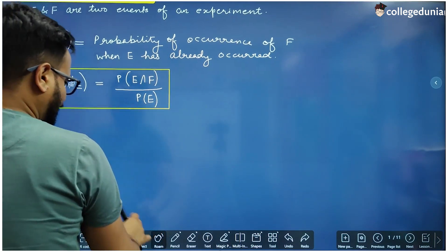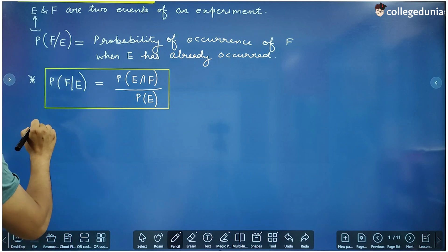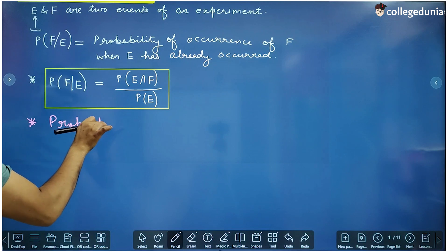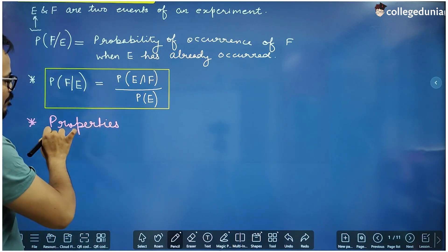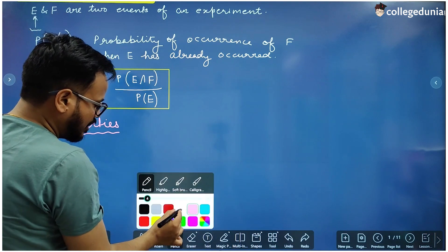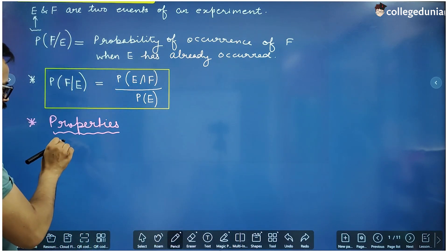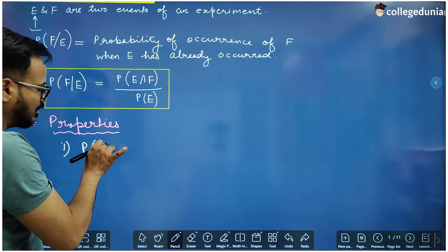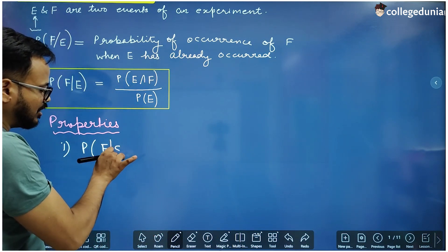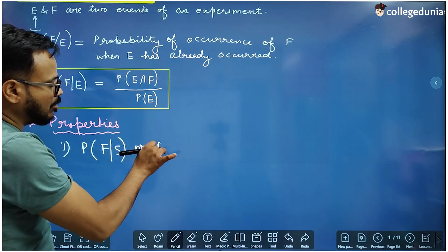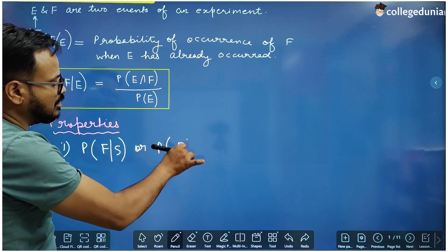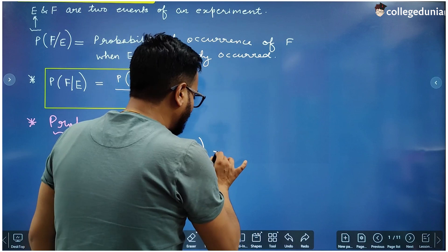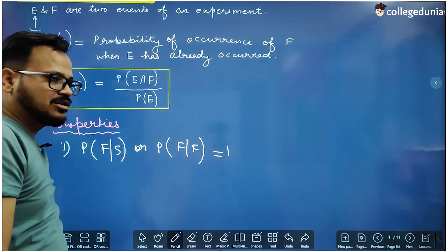Now, some properties of conditional probability. Property number one: suppose the sample space is represented by S. The probability of occurrence of event F when the whole sample space has already occurred, P(F|S), and the probability of F when F itself has already occurred, P(F|F) — the value of both these results is one.